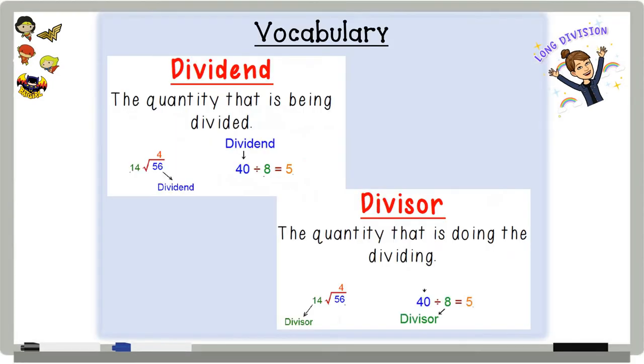First and foremost, I have to know my parts of long division. So the dividend, and this is all division, it shouldn't just be long division. The dividend is the number that is being divided. It's what's being split up into groups or into pieces.